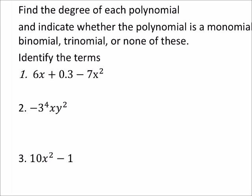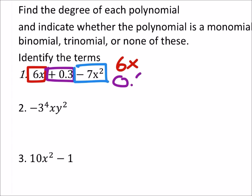Identify the terms. Let's look at number one here. So again they're always separated by addition and subtraction so I'm going to just kind of square in each term right here and they do take the sign that it's immediately to its left whether it's addition or subtraction. So the terms for this one would be 6x, the next one is 0.3, and the next one is negative 7x squared.